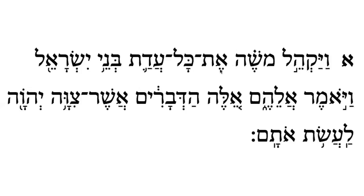Next we have an aleph with a segol, which says 'eh,' and a tav, so together it says 'et.' This is a direct object pointer, and there is usually no translation for this in English.